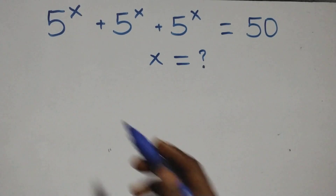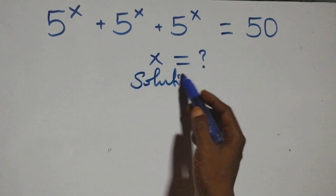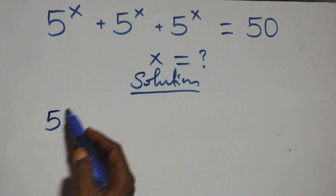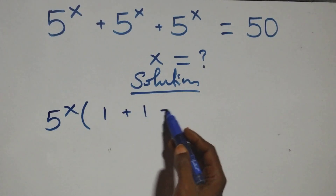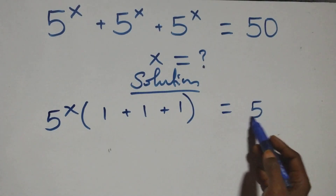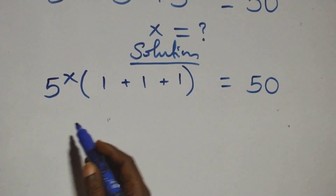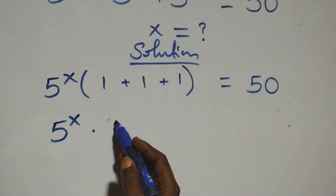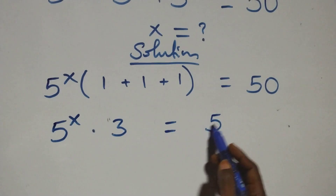Hello, you are welcome. Here we solve this exponential equation. We factor 5 raised to power x: we have 5 raised to power x in brackets, left with 1 plus 1 plus 1, which equals 50. That gives us 5 raised to power x times 3 equals 50.